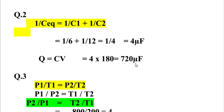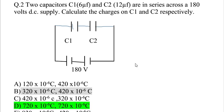Now we find the charge using Q equals CV, which equals 4 times 180, giving us 720 microfarads. In series, the charge is the same on both capacitors. So option D is our correct answer: 720 microfarads.